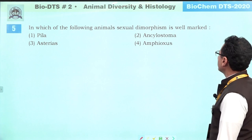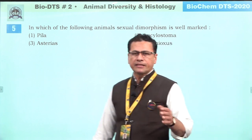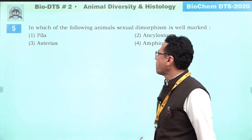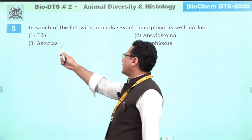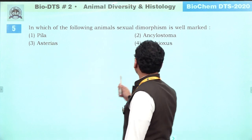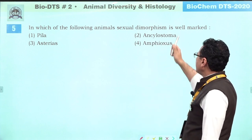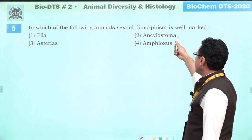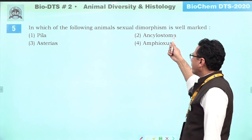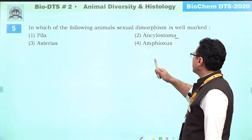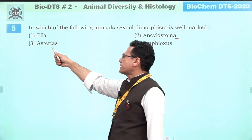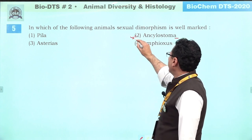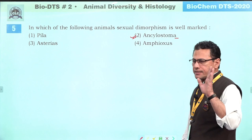In which of the following animals is sexual dimorphism present? Sexual dimorphism means we can differentiate the sex of an animal by just viewing its external features. Pila is a mollusk — sexual dimorphism is not there. Ancylostoma is a member of Aschelminthes, and here the male is slightly shorter than the female. Clear-cut sexual dimorphism is seen in Ancylostoma duodenale, a member of phylum Aschelminthes.